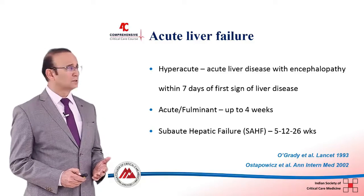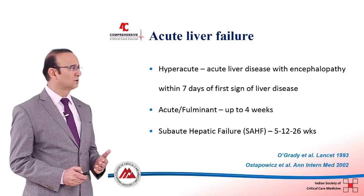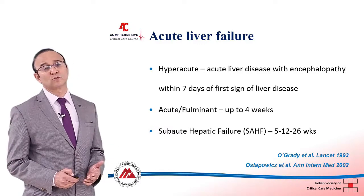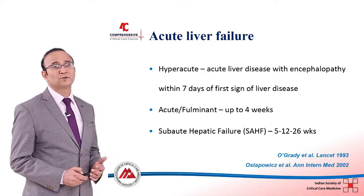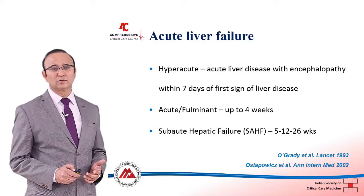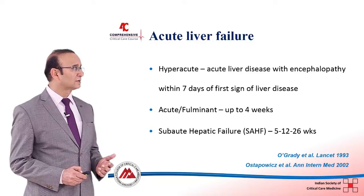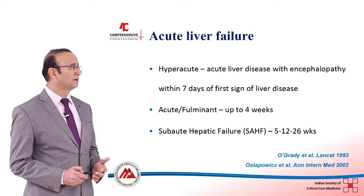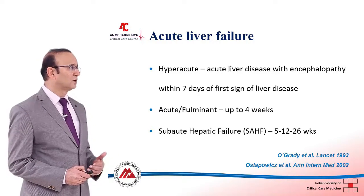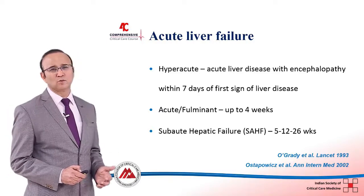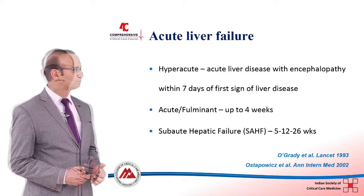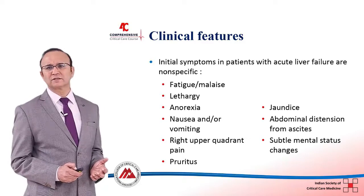Hyper-acute and acute have a better prognosis compared to sub-acute hepatic failure. Cerebral edema is more common in hyper-acute and acute liver failure, whereas sub-acute liver failure carries more chances of patients developing renal failure or portal hypertension, which are more frequently observed in patients with sub-acute liver failure. As far as the clinical features are concerned...